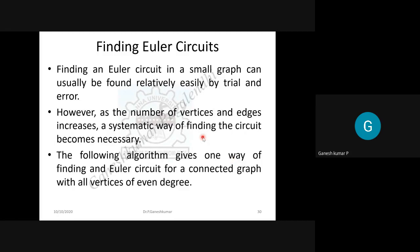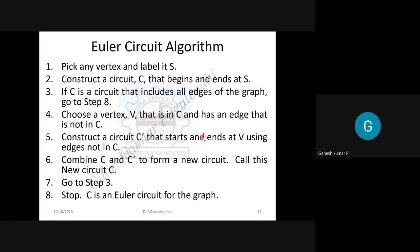The algorithm works as follows: given a graph with N vertices and M edges, first choose any vertex and label it V. Then construct a circuit C, constrained to begin and end at the same vertex V. If the circuit C includes all the edges, go to step 8: stop the process and output C as the Euler circuit.